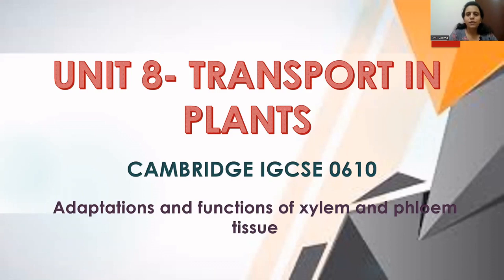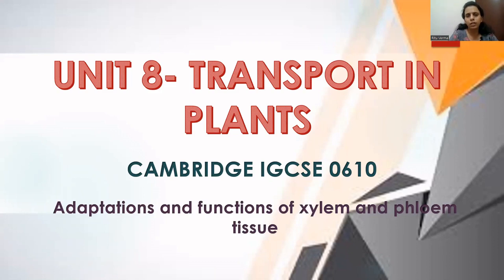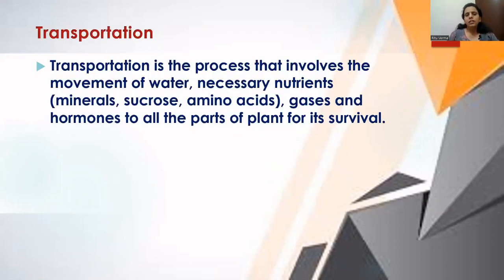Hi everyone. In this video we are going to start with Unit 8: Transport in Plants from the Cambridge IGCSE Biology syllabus, paper code 0610. We are mainly going to discuss the meaning of transportation and learn about the adaptations and functions of different tissues present in plants which help them in the process of transportation.